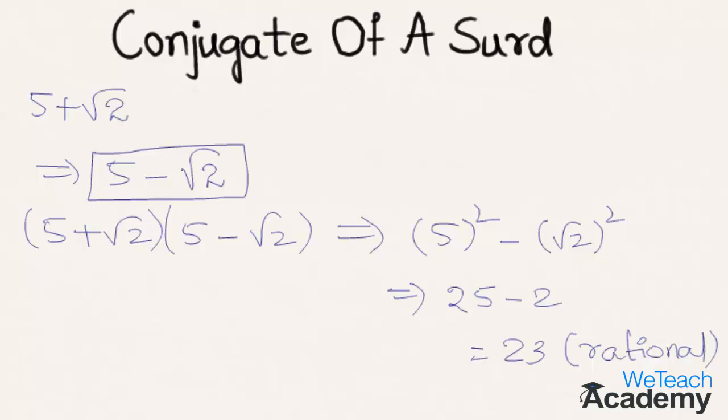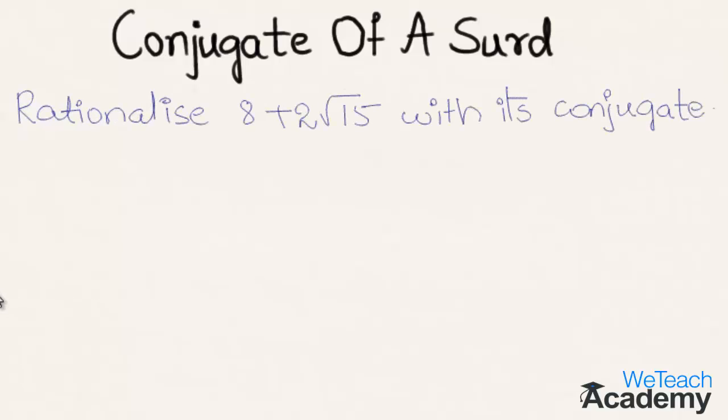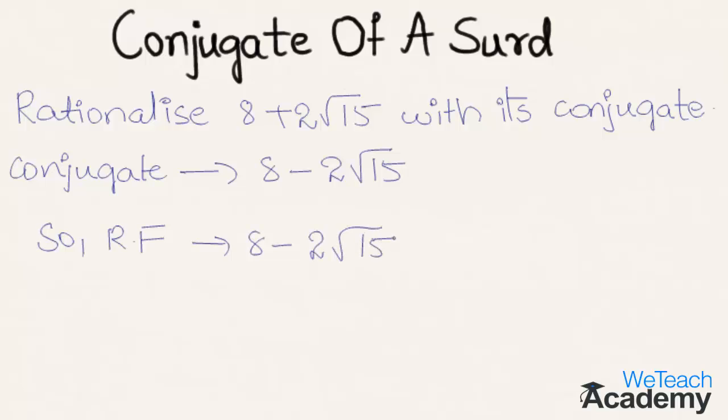Now let us solve a problem using this concept. The given problem is: rationalize 8 plus 2 root 15 with its conjugate. So here conjugate of 8 plus 2 root 15 is 8 minus 2 root 15. We can say that the rationalizing factor is also 8 minus 2 root 15.